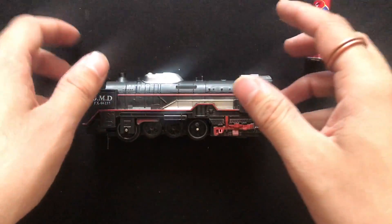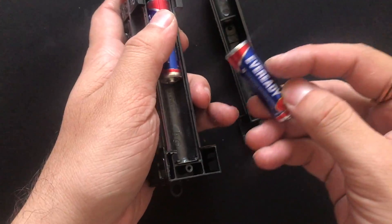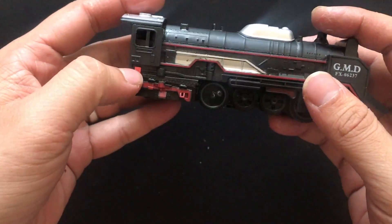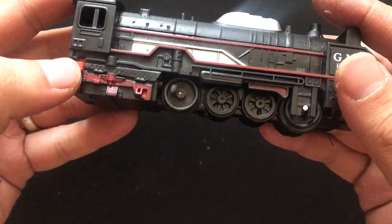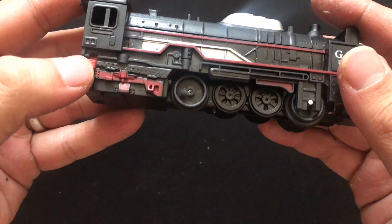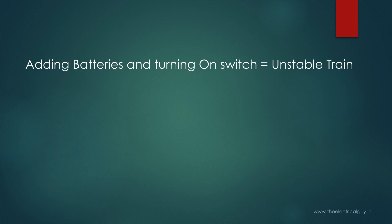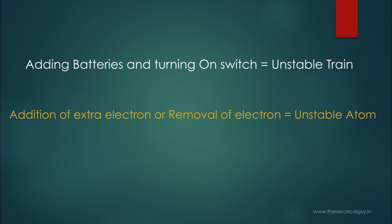The atom is like this train. In its normal condition, the train is completely stable and not moving. But if we add batteries and turn on the switch, the train becomes unstable and starts moving. It will keep moving until the battery runs out or the switch is turned off. Adding batteries and turning on the switch is equivalent to adding an extra electron to an atom — as soon as we do that, the system becomes unstable and tries to release the required electron.